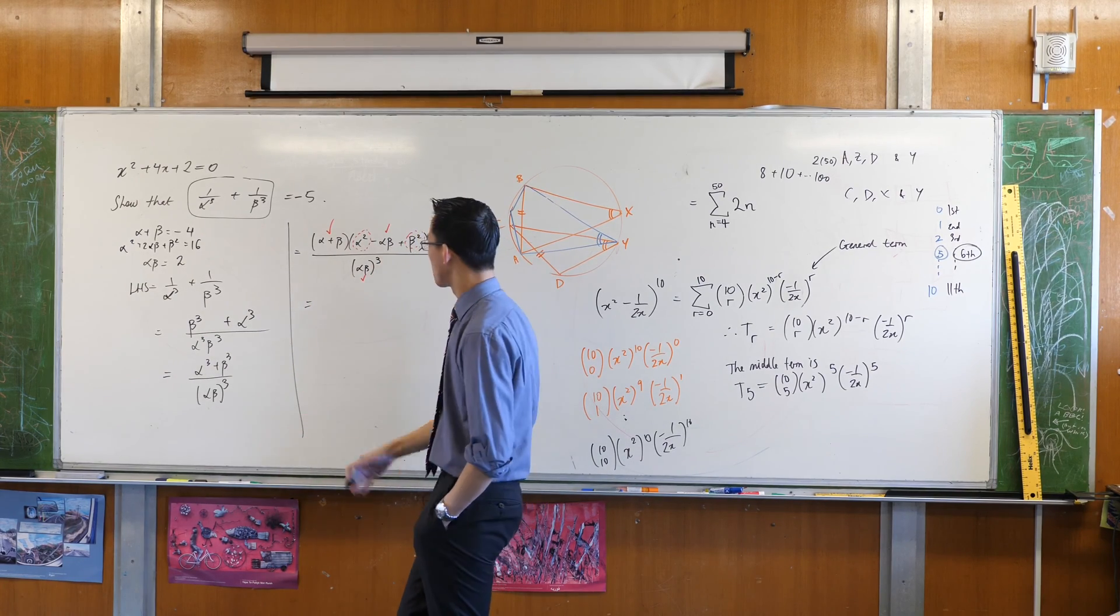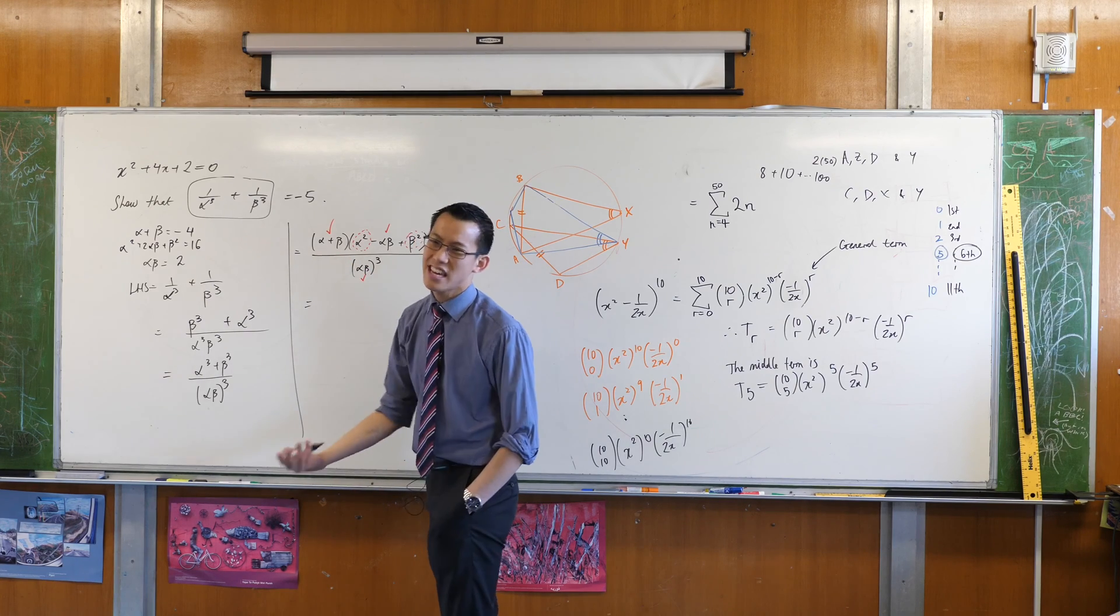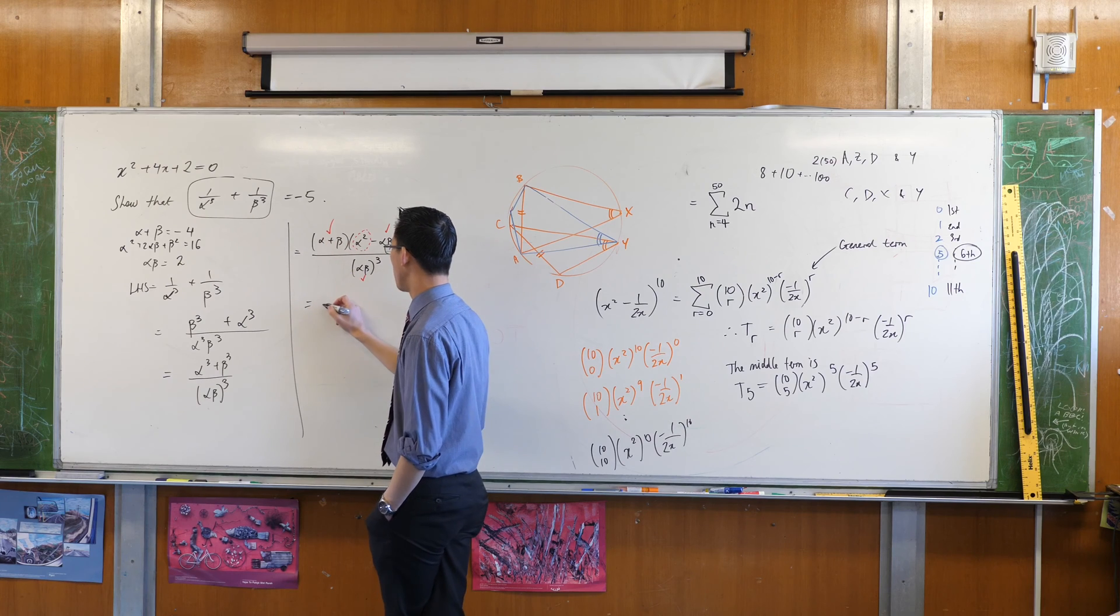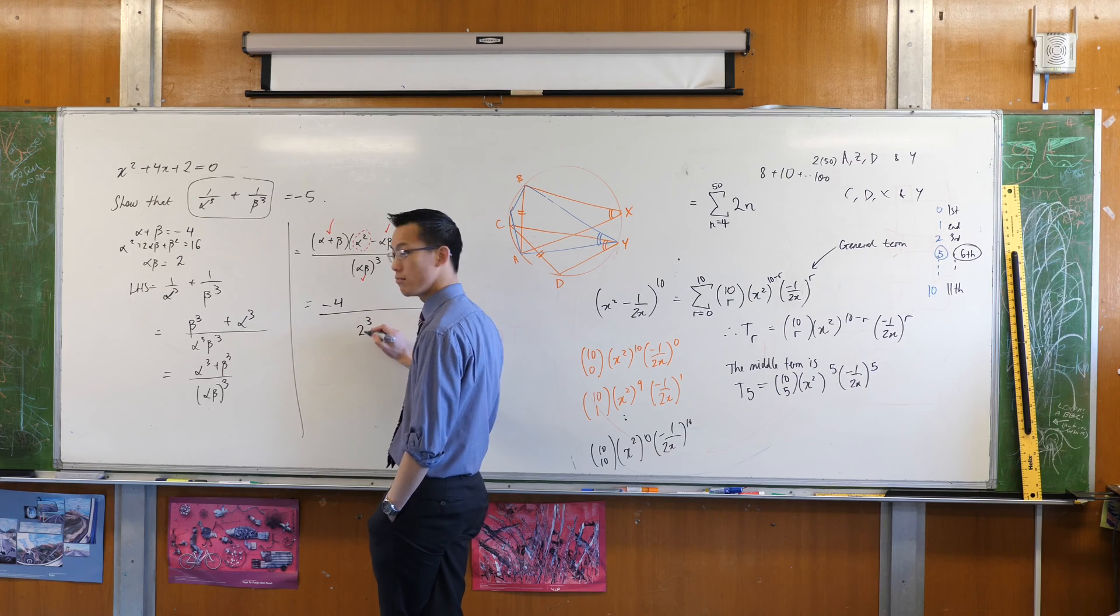I'm going to subtract something. So I'm going to do two things in this next line. The first thing is I'm going to replace these guys. I don't need to keep writing them. I know what they are numerically. So that's negative four. On the denominator, I have two cubed. Is that okay?